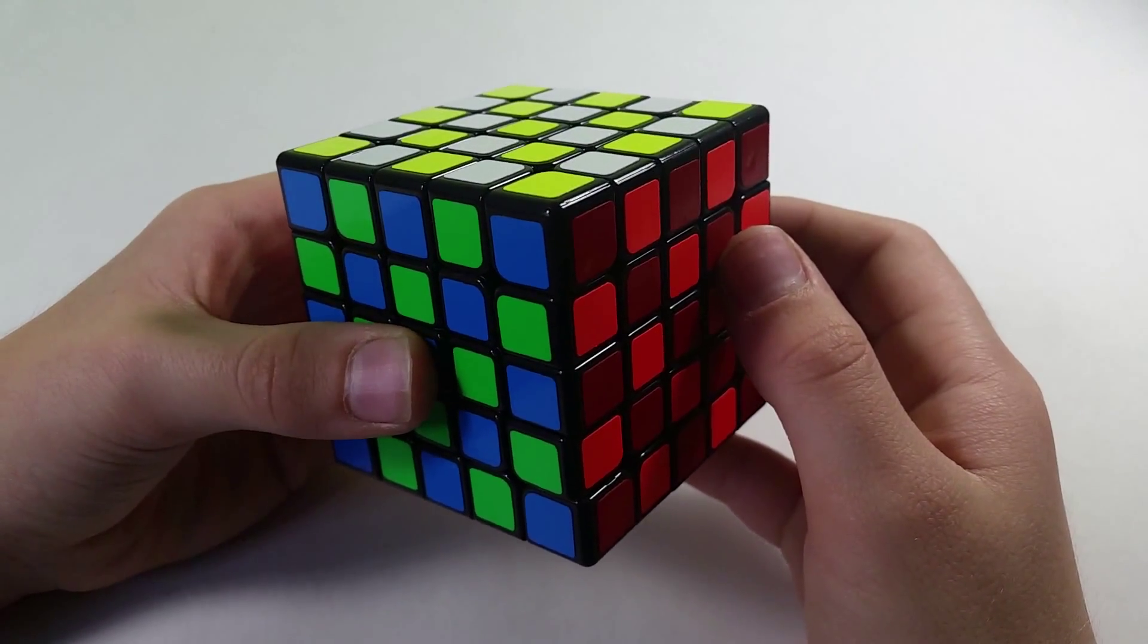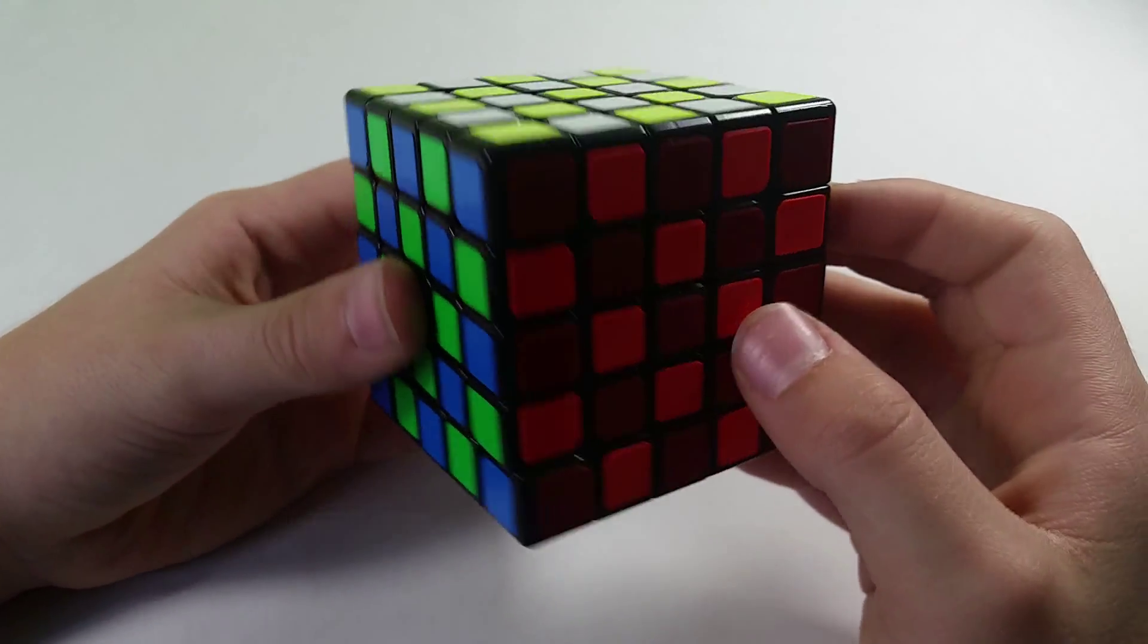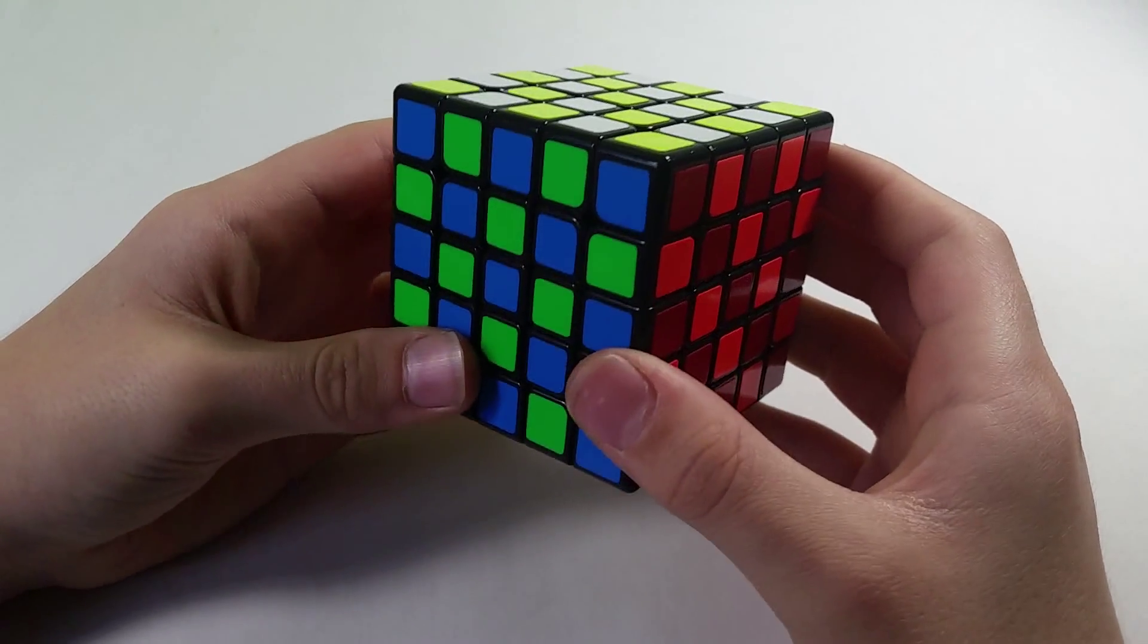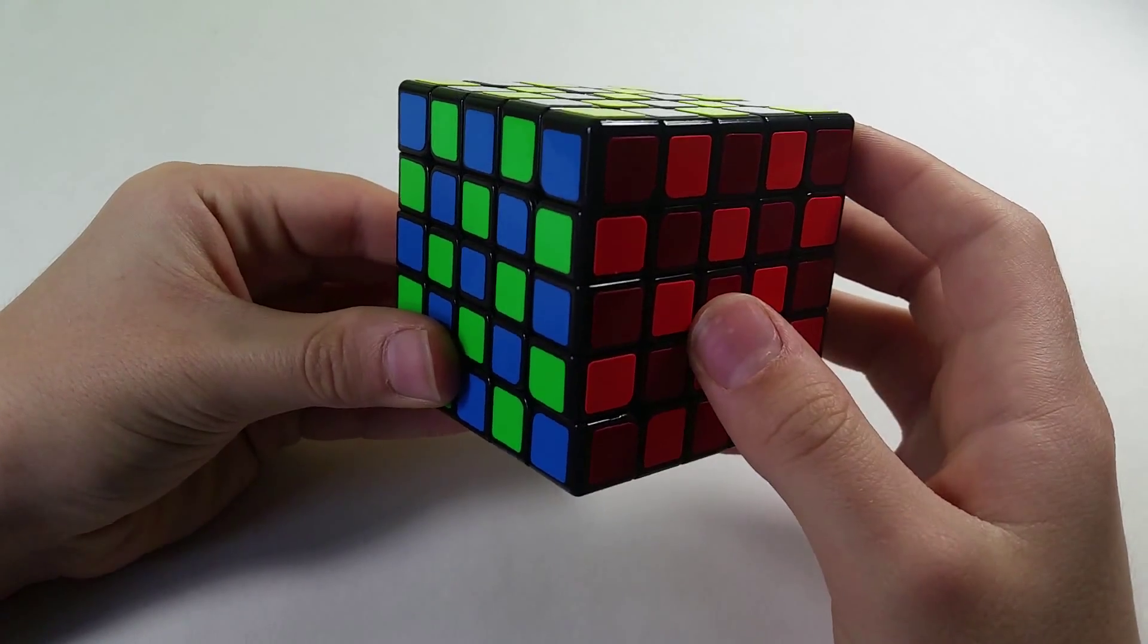5x5 can be purchased from thecubicle.us for $17. That is $21 less than its main competitor, the $38 Moyu Huacuang, that already puts this cube in the lead.